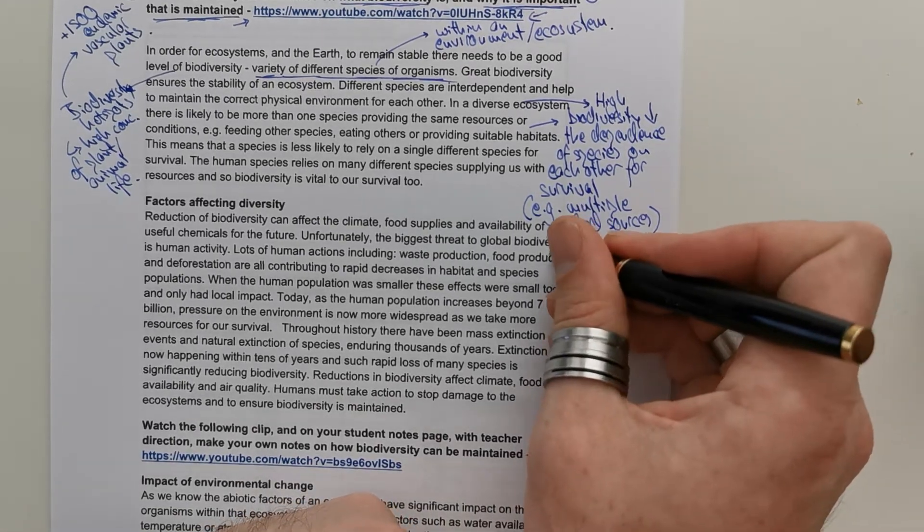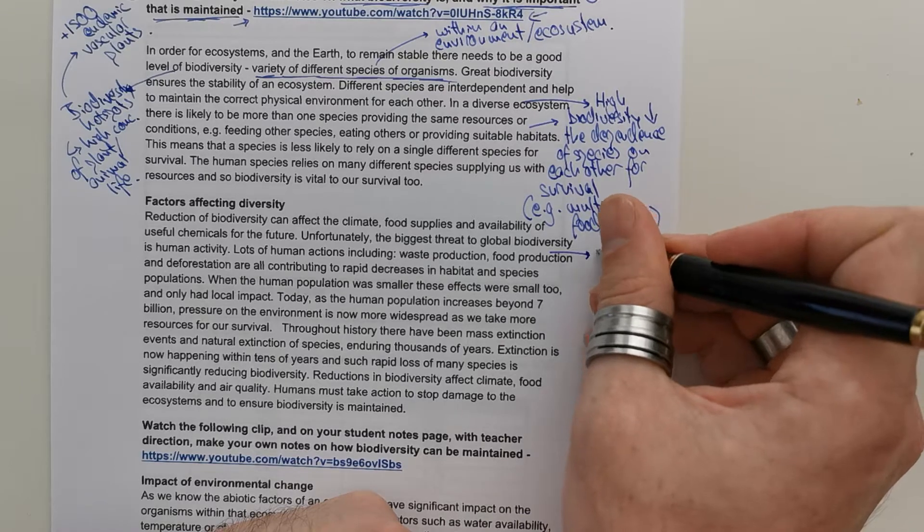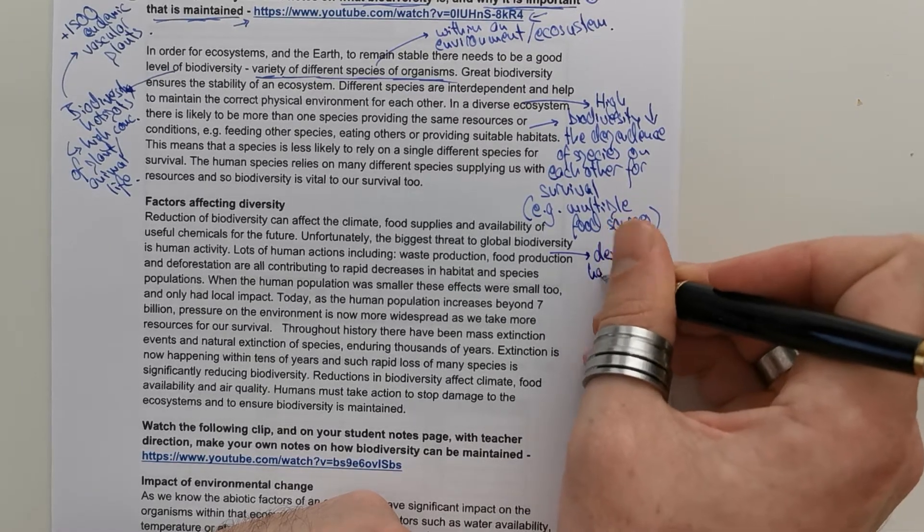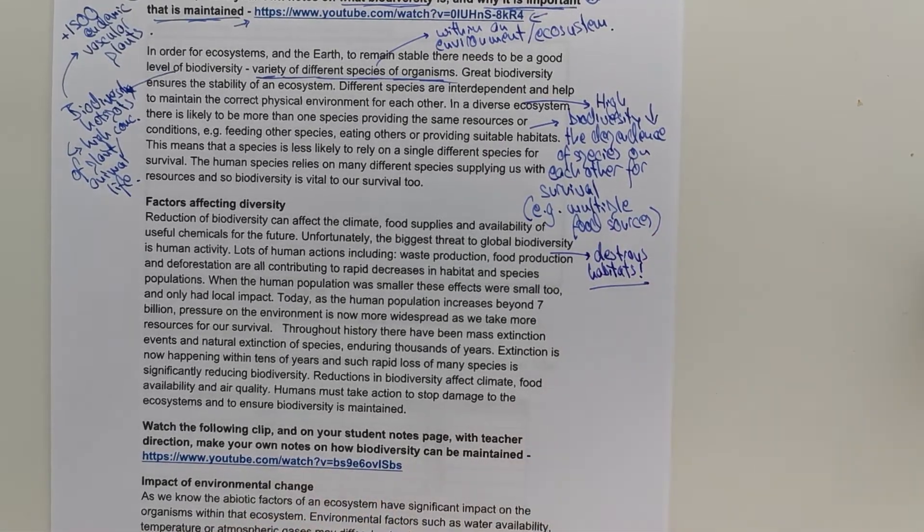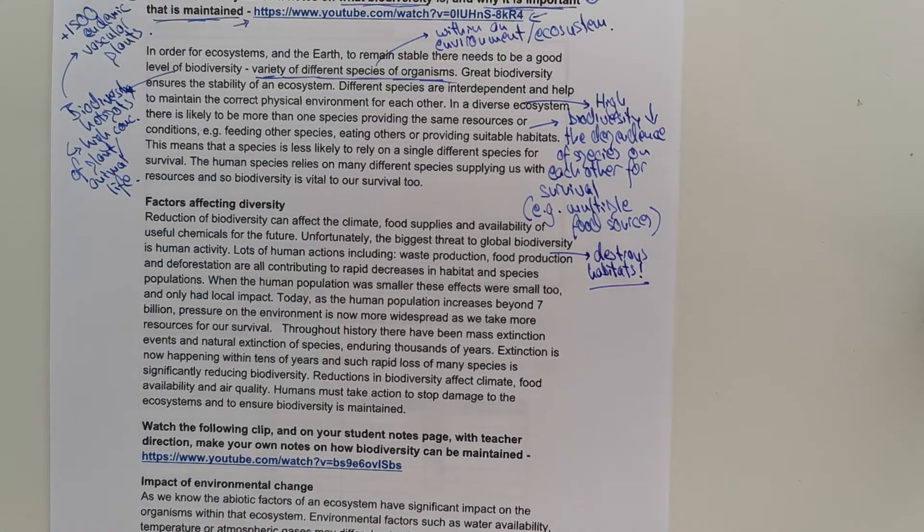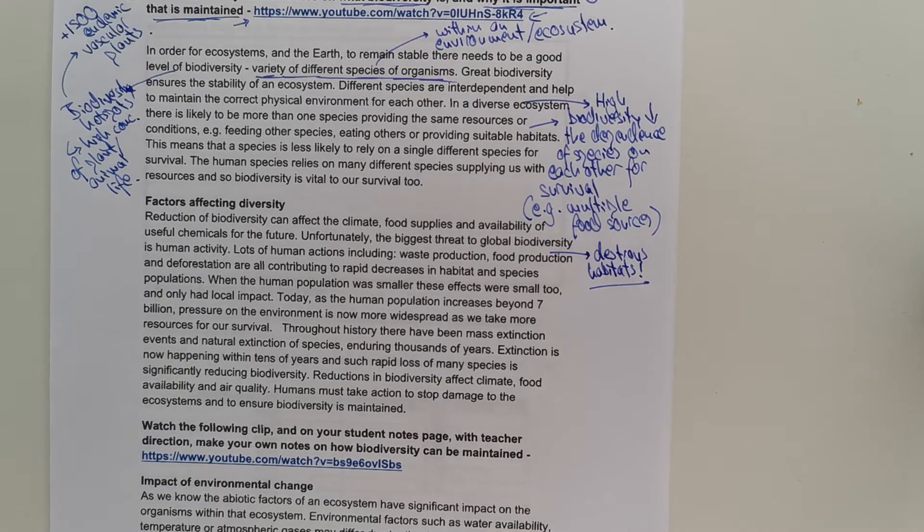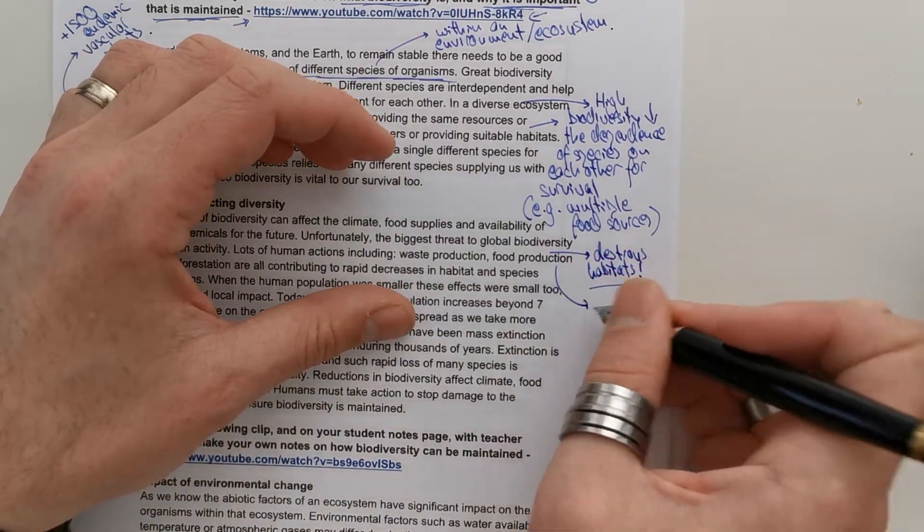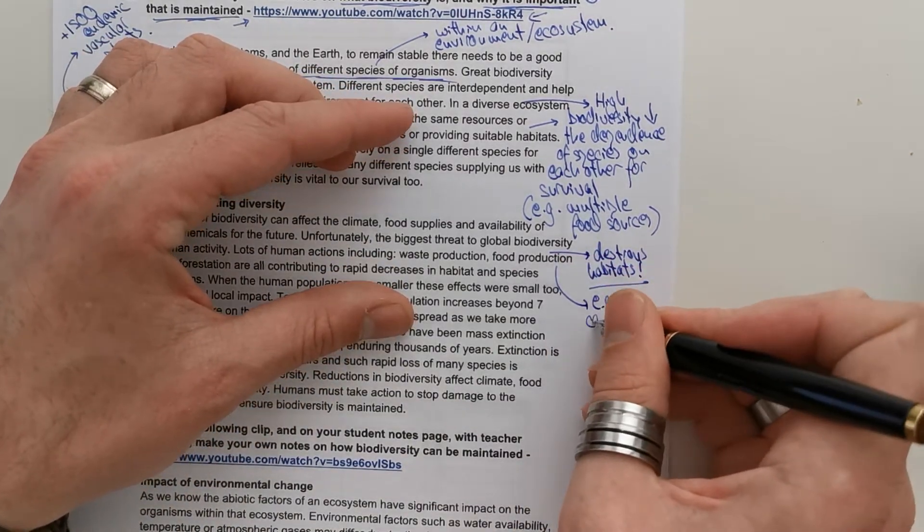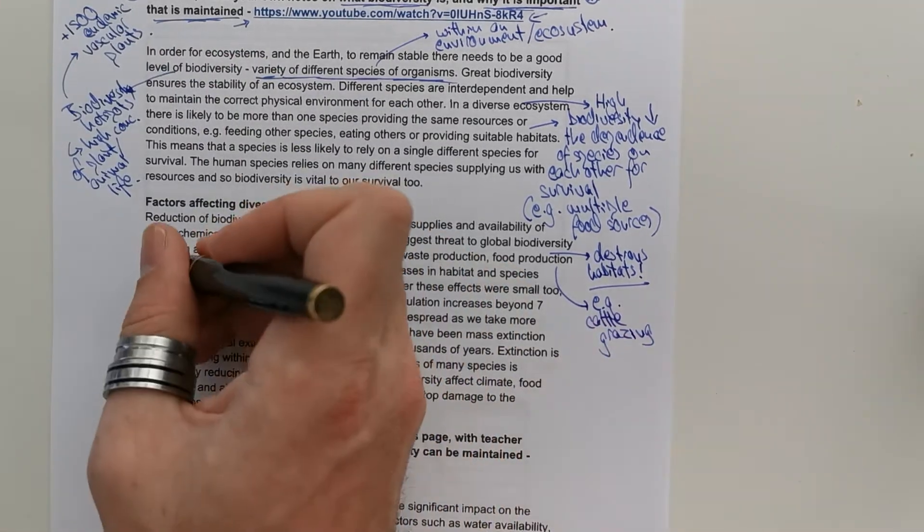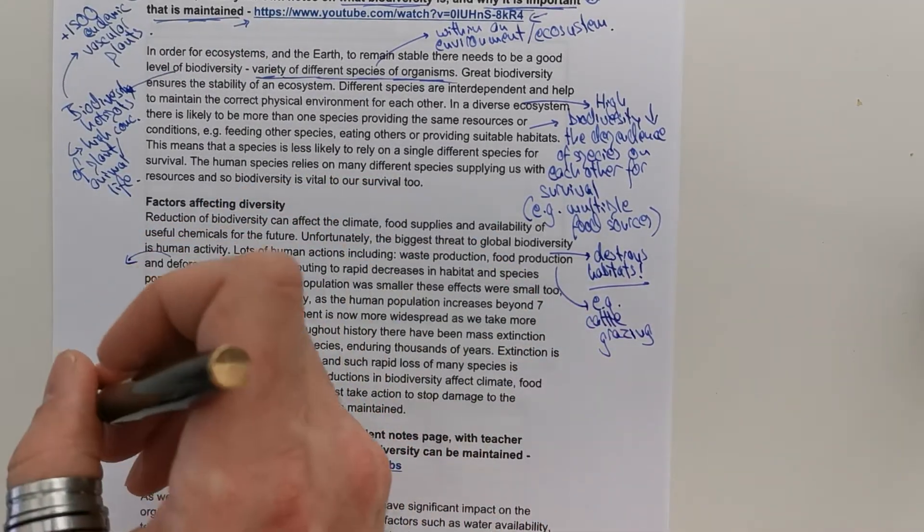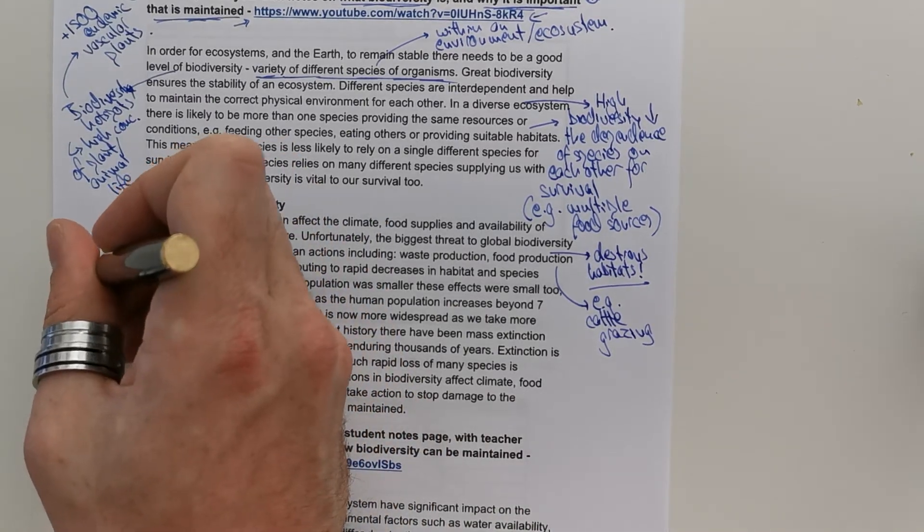So, for example, food production destroys habitats. Where does the beef in the beef burger in your McDonald's burger come from? Comes from cattle that are grazed on large swathes of rainforest areas and places like that that have been chopped down to make space for cattle to graze.